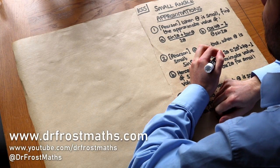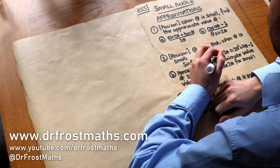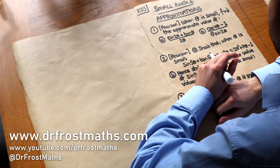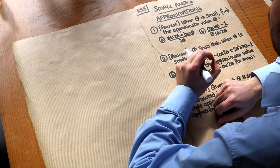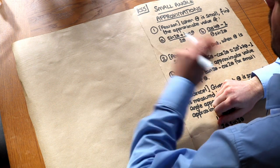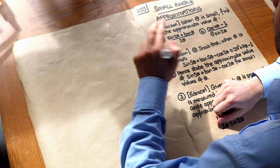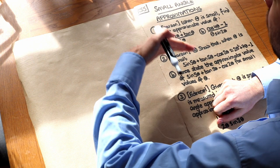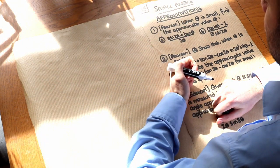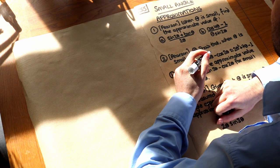Hello and welcome to this Dr. Ross from Maths video on Key Stage 5 Small Angle Approximations. Hopefully you've already watched the video on radians, where we saw that radians was another unit of angles — just like degrees — where one radian meant that you'd rotated one radieth of the way around the circle. If that doesn't make sense to you, I suggest you watch that video first.